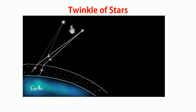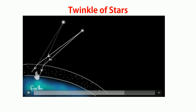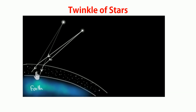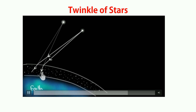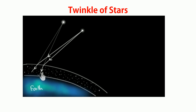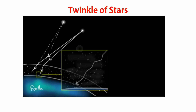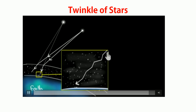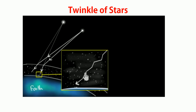Because the density is continuously changing, the apparent position moves here and there. This is why the star appears to twinkle. The bending changes slightly each time, so sometimes the star appears here, sometimes there — and that flickering apparent position is what we see as twinkling.